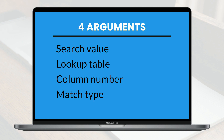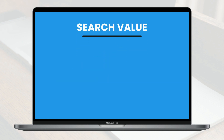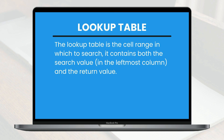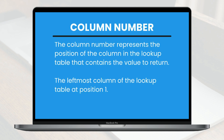Let's take a look at each argument. The first is the search value — this is the value we want to search for in the lookup table, and it must be in the first column of the lookup table. The next argument is the lookup table, which is the cell range in which to search. It contains both the search value in the leftmost column and the return value. The third argument is the column number, representing the position of the column in the lookup table that contains the value to return, with the leftmost column at position one.